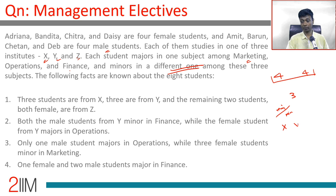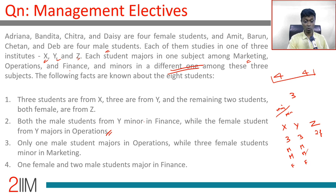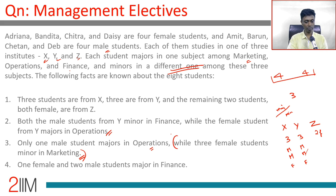Both male students from Y minor in Finance. That means there are two males in Y, and both minor in Finance, so the third student in Y must be female. Three female students minor in Marketing — that's a significant constraint. One female and two male students major in Finance. Only one male student majors in Operations.